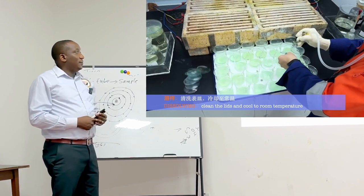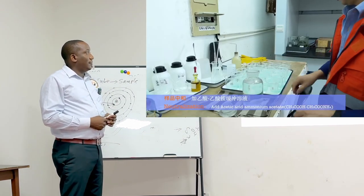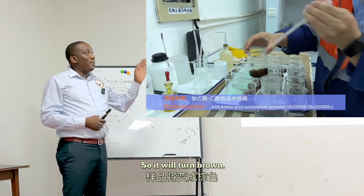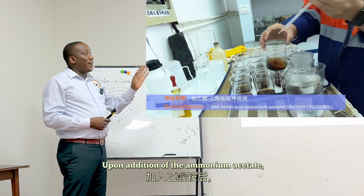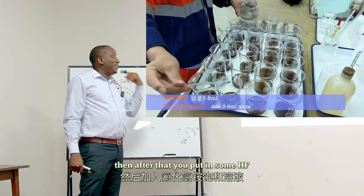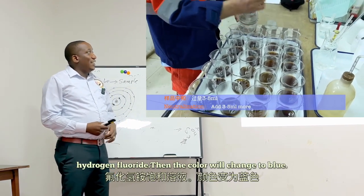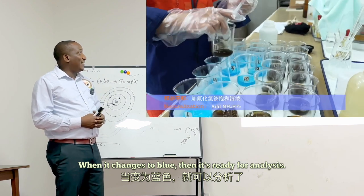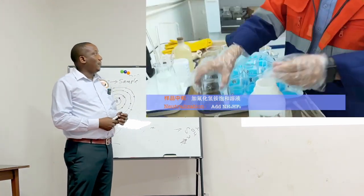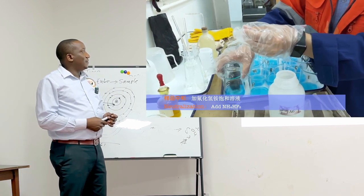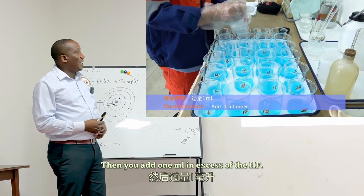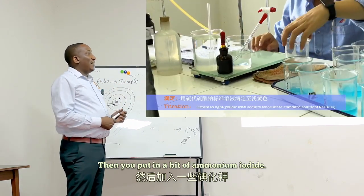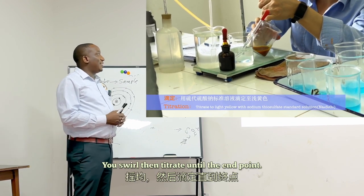At this stage, digestion is almost complete. The next step is to mask the iron — we add some ammonium acetate buffer to mask the iron, and it turns brown upon addition. Then we add some HF — hydrogen fluoride — and the color changes to blue. When it changes to blue, it is ready for analysis. We add one milliliter in excess of the HF, then rinse to ensure no copper is sticking on the walls. Then we add a bit of ammonium iodide, swirl, and titrate until the endpoint.